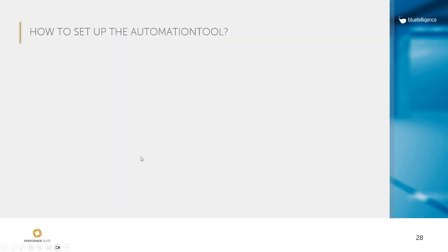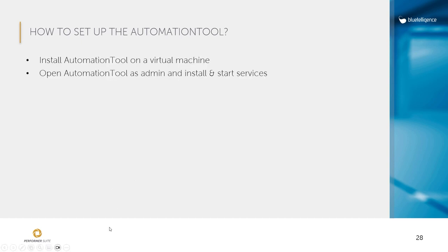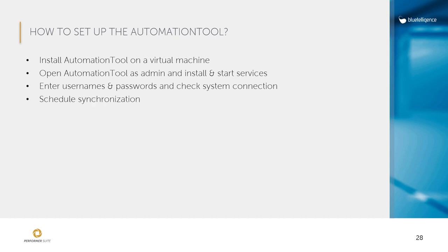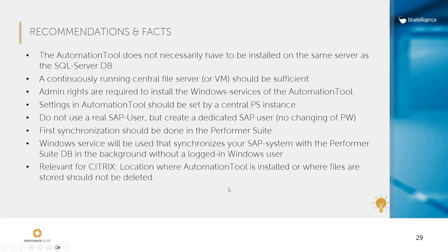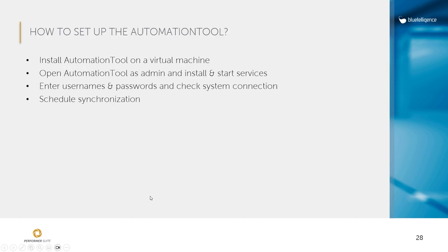This is how SAP objects are always kept up to date. Here are a few recommendations: install the automation tool on a virtual machine, open the automation tool as an administrator, install and start the services, enter the usernames and passwords, and check the system connection. You can then schedule the synchronization.